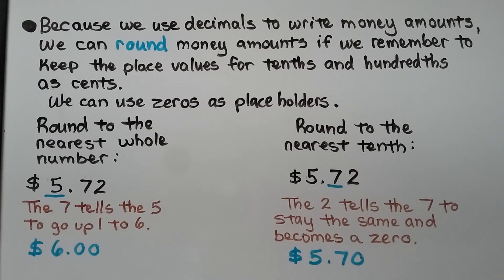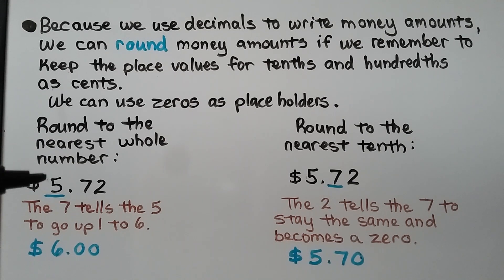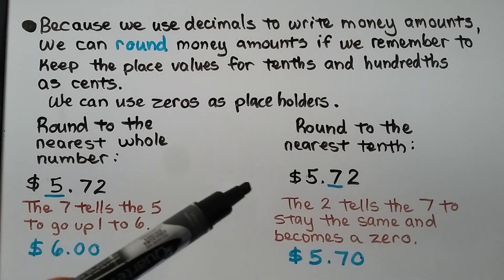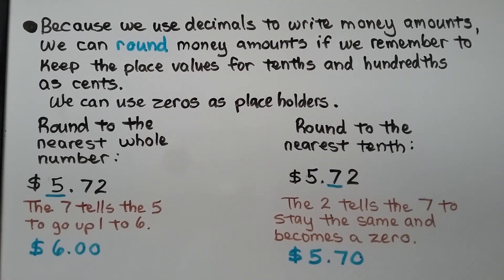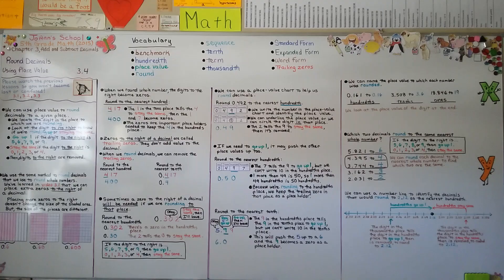Because we use decimals to write money amounts, we can round money amounts if we remember to keep the place values for tenths and hundredths as cents. We can use zeros as placeholders. We need to round to the nearest whole number — the 7 tells the 5 to go up to a 6, so $5.72 rounds to $6.00. We need to round the same amount to the nearest tenth — the 2 tells the 7 to stay the same and becomes a zero, so it rounds to $5.70. Remember that trailing zeros don't add value to the decimal and we can remove them, but sometimes a zero to the right of a decimal will be needed if we're rounding to that place value.